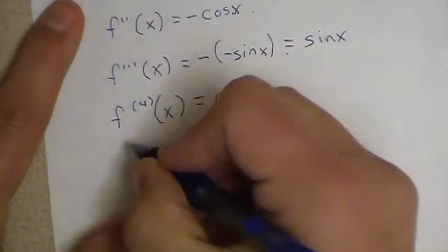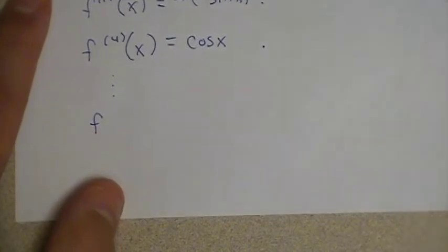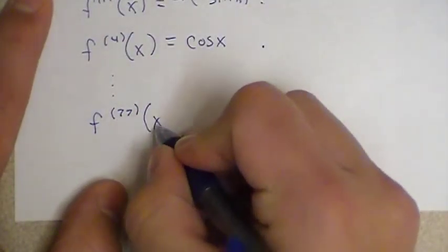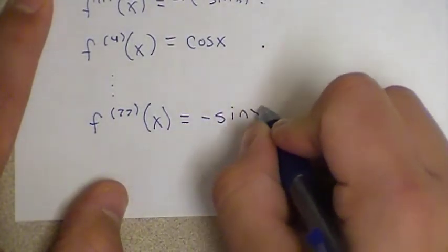So the 77th derivative here, even though we haven't computed all 77 derivatives, we developed a pattern, we're exploiting the pattern. We're going to be able to say that the 77th derivative is going to be equal to negative sine of x.